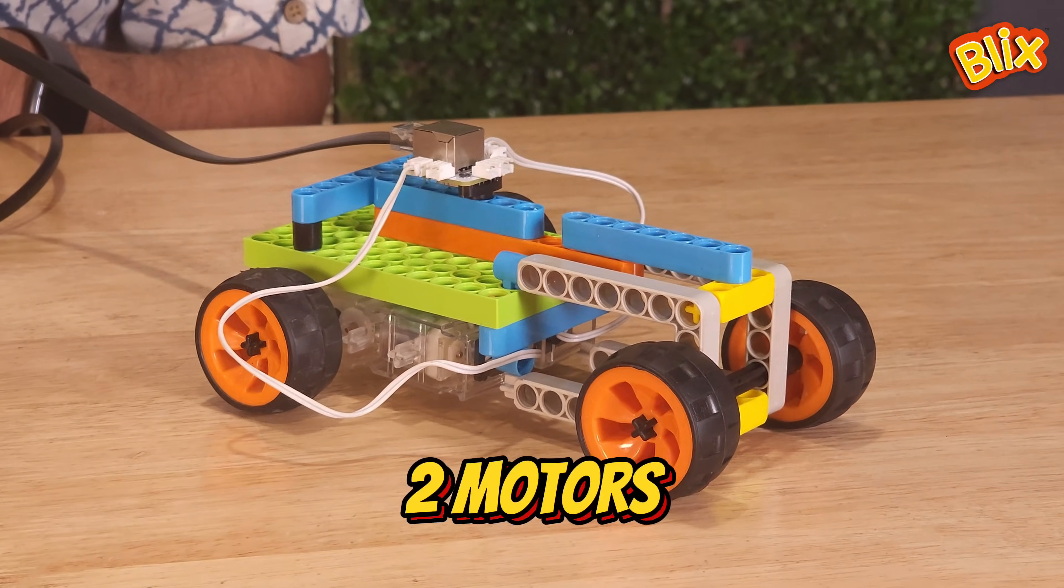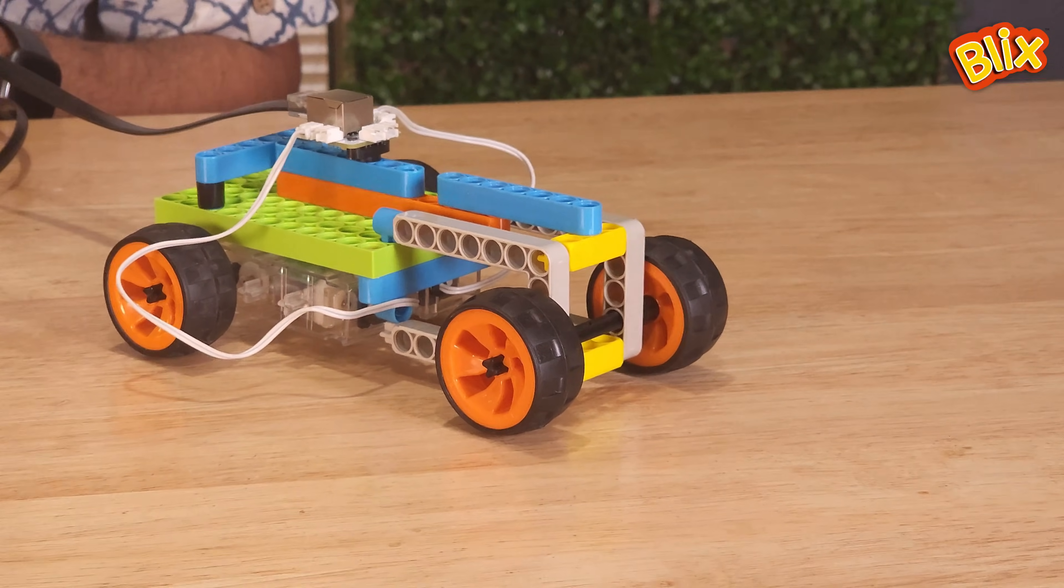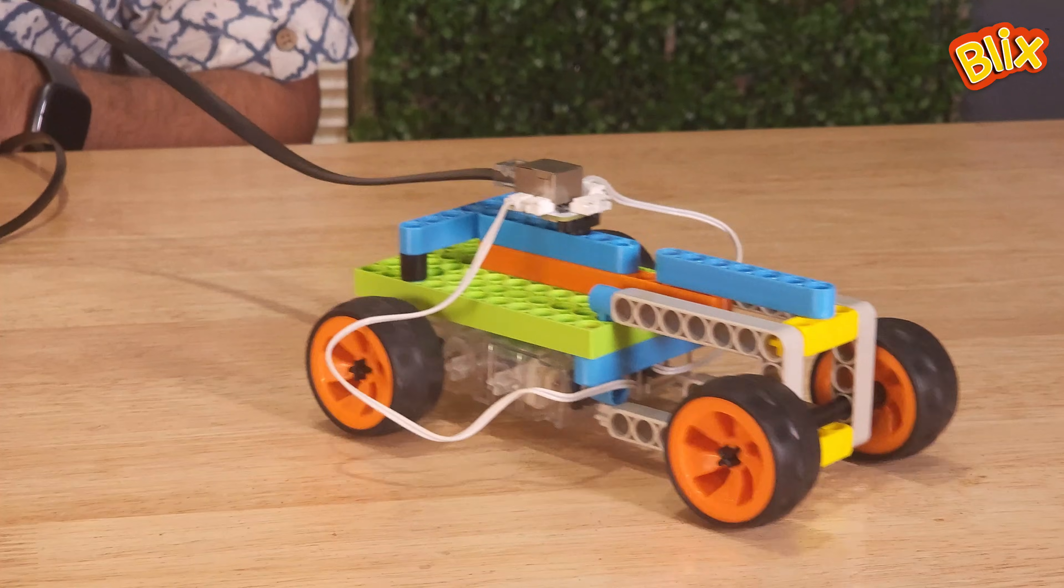Suppose you have built a car like this with two motors that are driving the two rear wheels. It is very easy to make this car go forward and backward.